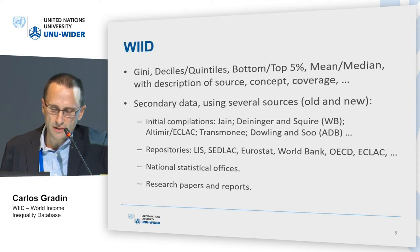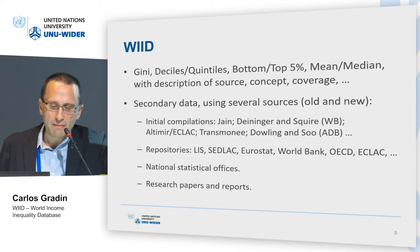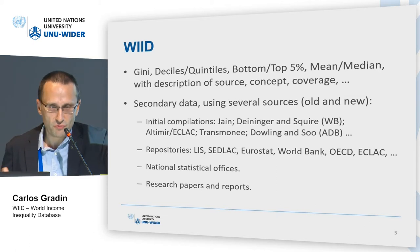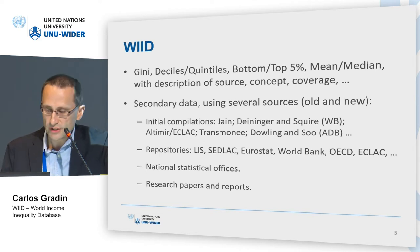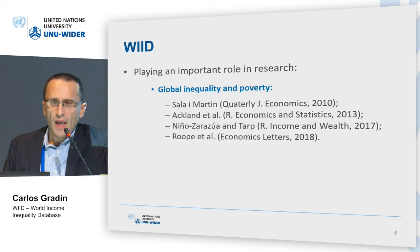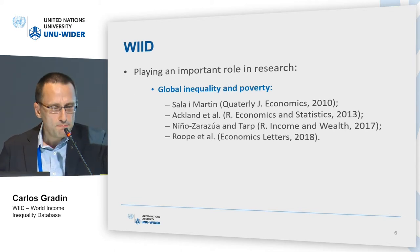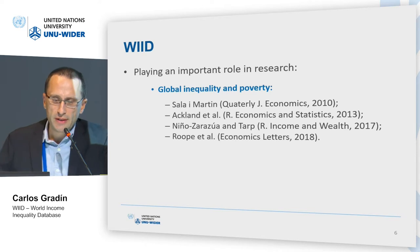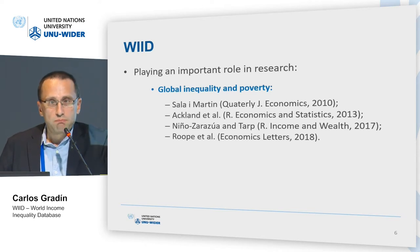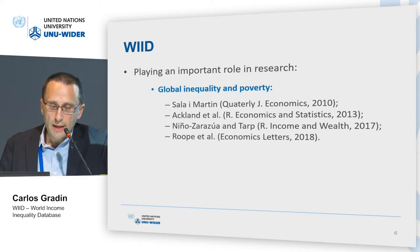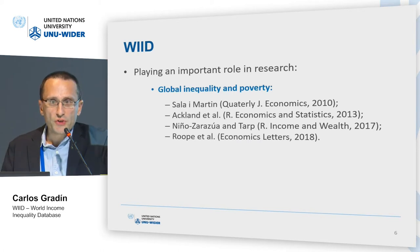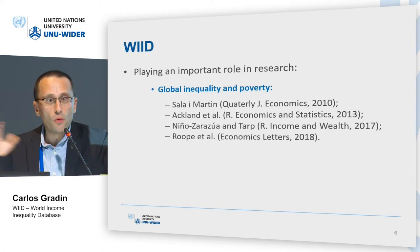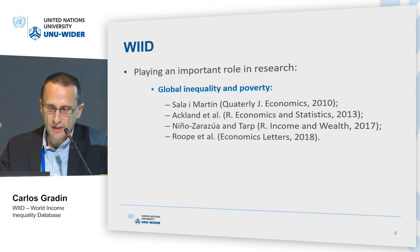That makes this task difficult. Also, some information can be reported in many different languages, and we are not always strong in all of them. We also look at research papers and reports where we can find information. The WIID has played an important role in research over the last years. In terms of global inequality, when you try to measure the level of inequality in the whole world or in big regions like sub-Saharan Africa or Latin America, seminal papers like Sala-i-Martin in the Quarterly Journal of Economics have relied on it.